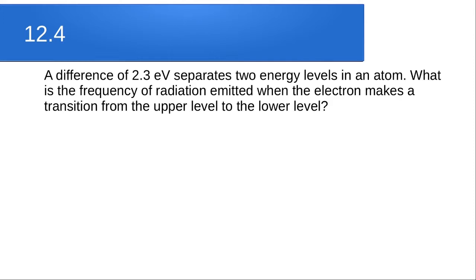Question 12.4: a difference of 2.3 electron volts separates two energy levels in an atom. What is the frequency of radiation emitted when the electron makes a transition from the upper level to the lower level? The question provides the difference in energy levels and asks us to find the frequency of the radiation emitted.